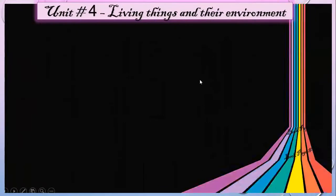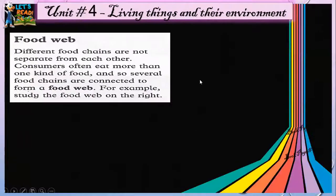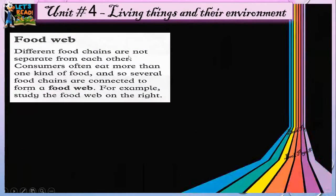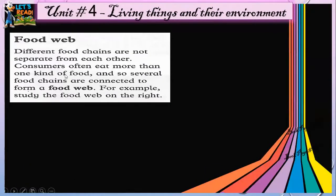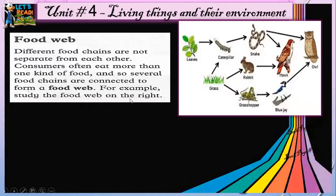Living Things and Their Environment, unit number four. You're on page number 36: Food Web. Different food chains are not separate from each other. Consumers often eat more than one kind of food, and so several food chains are connected to form a food web. For example, study the food web on the right.